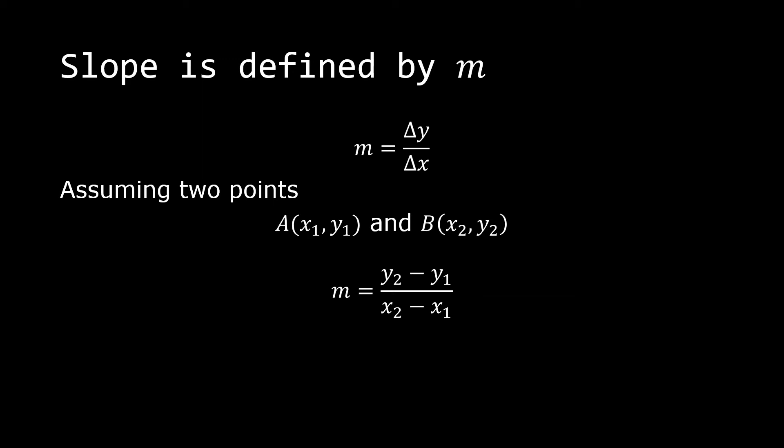Slope is defined by m, so m is equal to change in y over change in x. Assuming two points A with coordinates x sub 1 and y sub 1, and B with coordinates x sub 2, y sub 2, so m is equal to y sub 2 minus y sub 1, all over x sub 2 minus x sub 1.